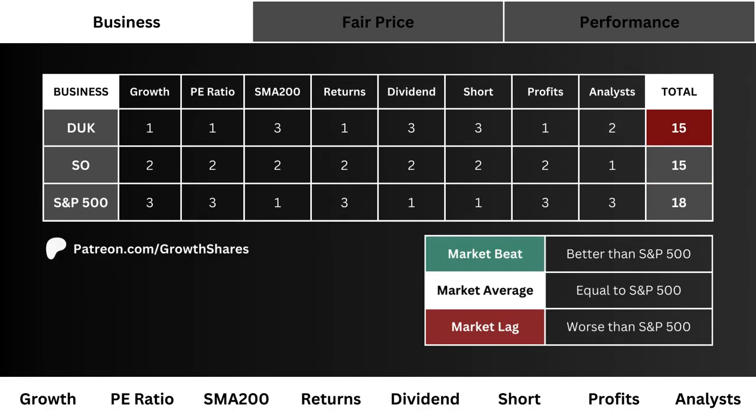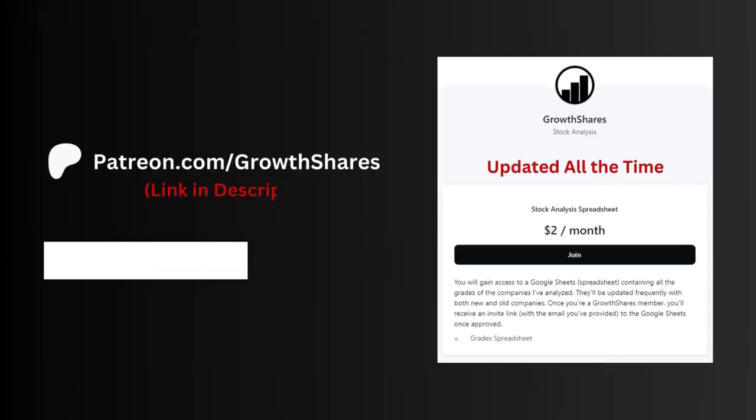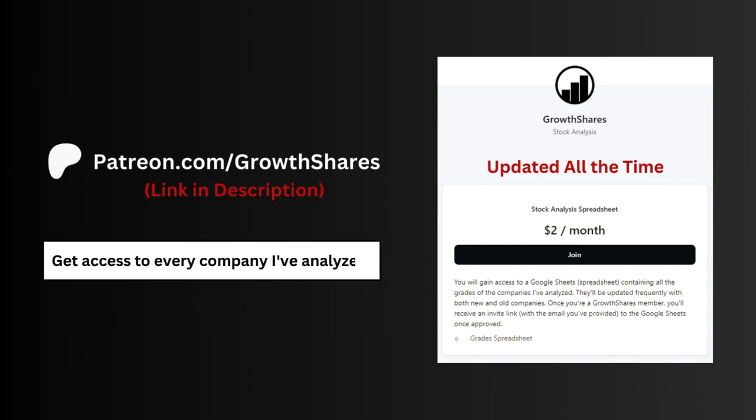After going through all our business metrics, what you see here is the total score for all three stocks — the higher the score, the better the business. If the company has a higher point total than the S&P 500, it's a market beat, and that's the preferred outcome.